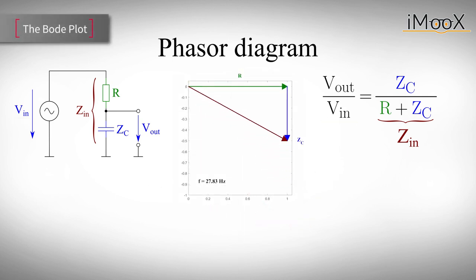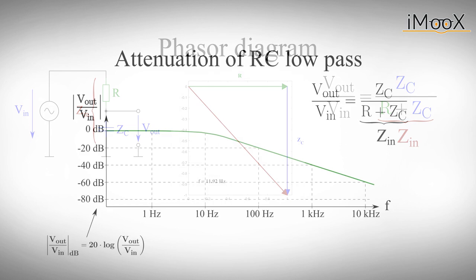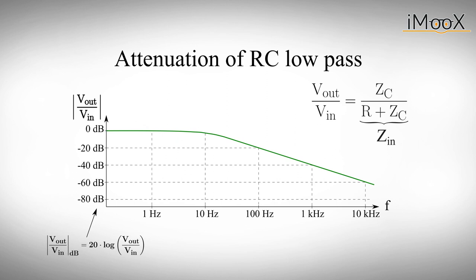Now we finally have all the things we need to describe the behavior of our filter at any frequency of our input signal. We can assume an arbitrary value for R and Zc and simply measure the length of the vector Zc and Zin. The angle of Zc will of course always be minus 90 degrees, but the angle of Zin will get smaller and smaller for higher frequencies.